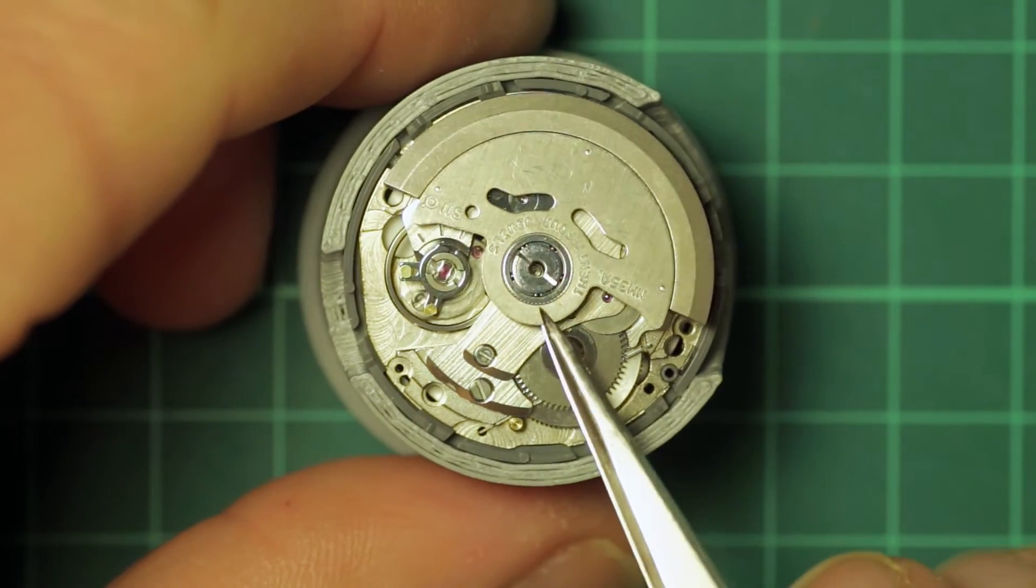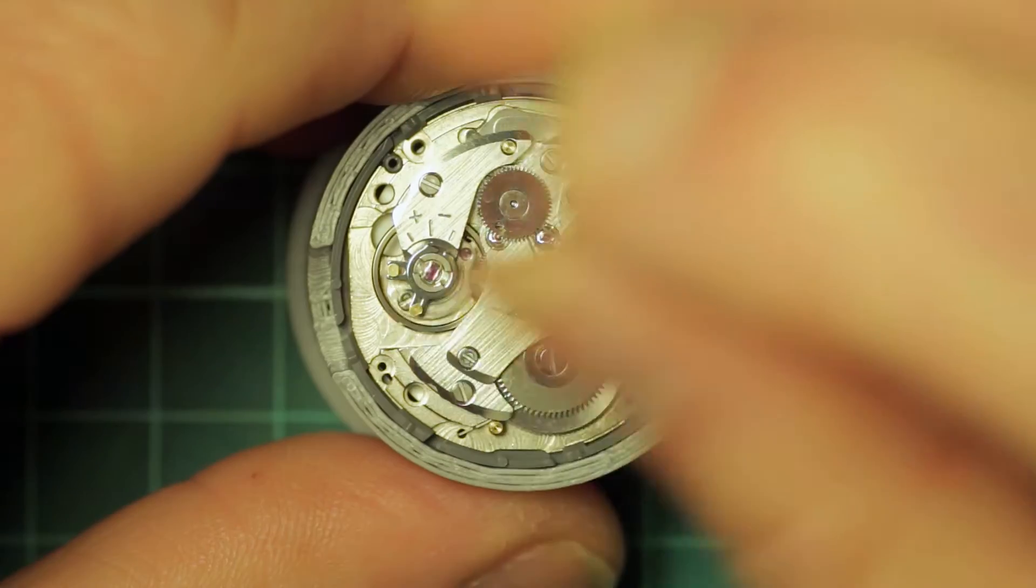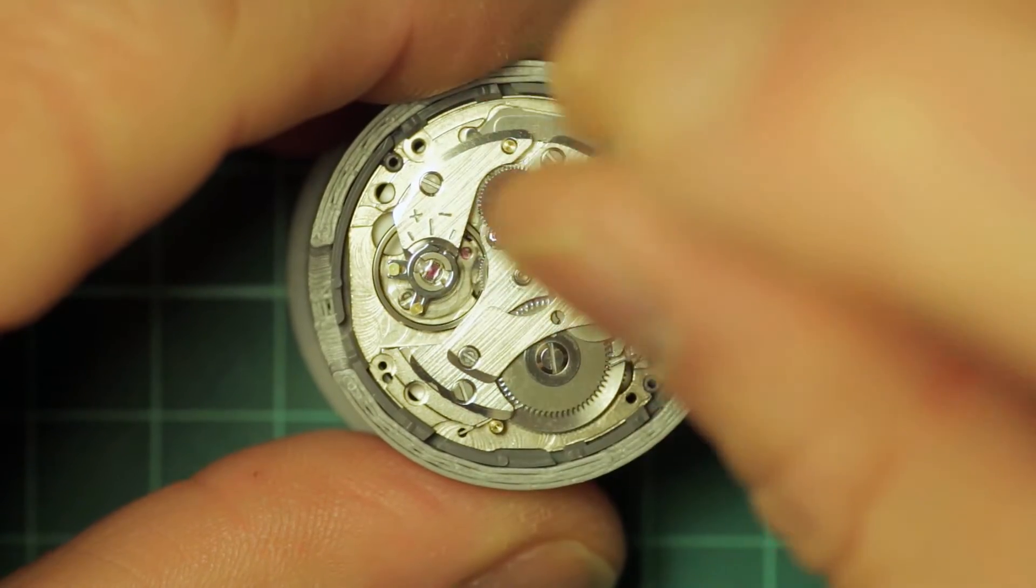So first of all we remove the oscillating weight by unscrewing the large centre bearing screw.